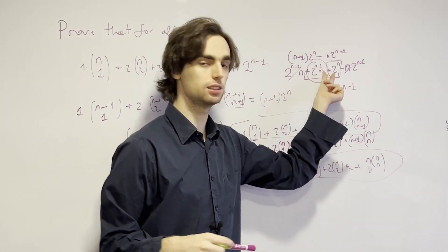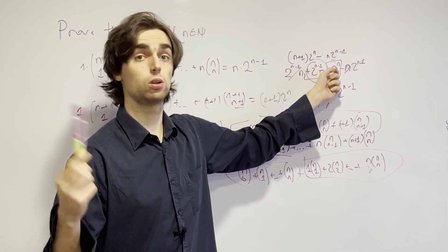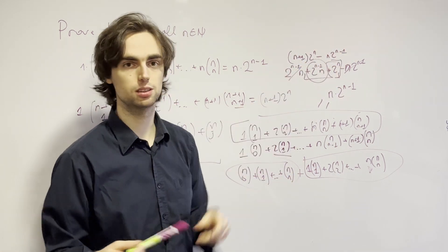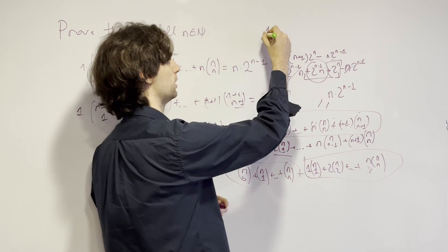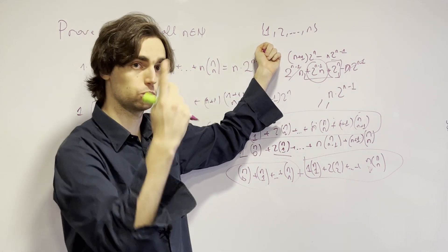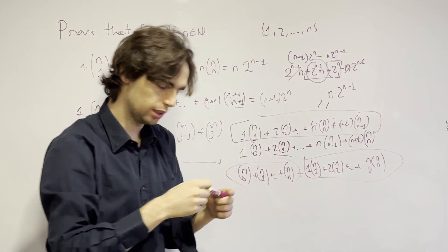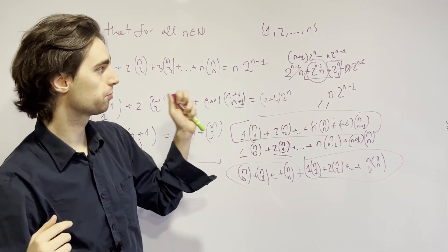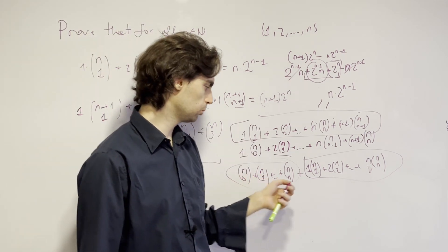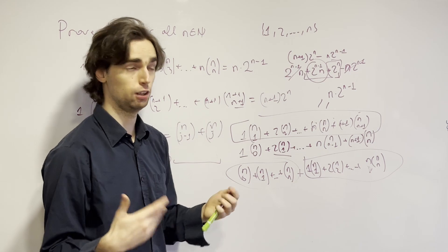What does n choose 0 plus n choose 1 all the way to n choose n equal? It equals 2 to the power of n. This is the total number of subsets of the set 1 through n. Why? Because for every element 1 through n, when picking a subset, you ask: is 1 in it — yes or no? That's two options. Is 2 in it — yes or no? Another factor of 2. So you get 2 times 2 times 2, n times — giving 2 to the n total subsets. On the other hand, there are n choose k subsets with exactly k elements, summed over all k, which equals the same thing by definition.